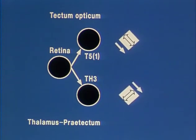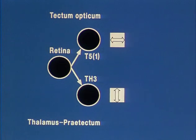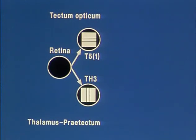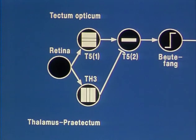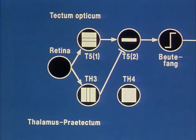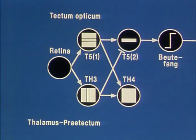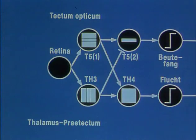For different directions of movement, these correlations remain unaltered. The hypothesis suggests that tectal neurons of type T5-2 receive excitatory influences from T5-1 neurons and simultaneously inhibitory influences from Th3 neurons. If Th3 is not activated and T5-2 thus not inhibited, prey-catching can be released. Other thalamic neuron types, Th4, receive both excitatory influences from Th3 and T5-1 neurons. This facilitatory interaction determines predator features and releases escape behaviour.